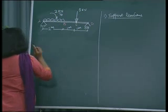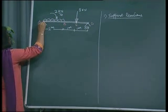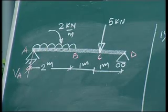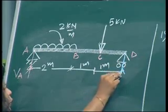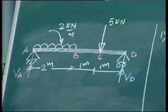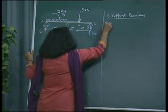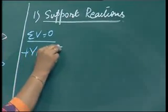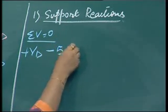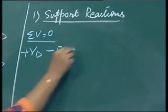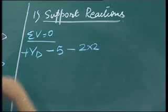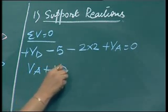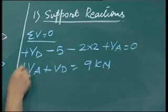To calculate the support reactions we apply equilibrium conditions: sigma H equals zero, sigma V equals zero, and sigma moment equals zero. At the hinge support there are two reactions — vertical and horizontal — but since there is no horizontal loading, only vertical reactions VA and VD are needed. Applying sigma V equals zero: VD (upward, positive) minus 5 (downward) minus 4, which is 2 times 2 for the UDL (downward), plus VA equals zero. So VA plus VD equals 9 kilo newtons — this is equation 1.